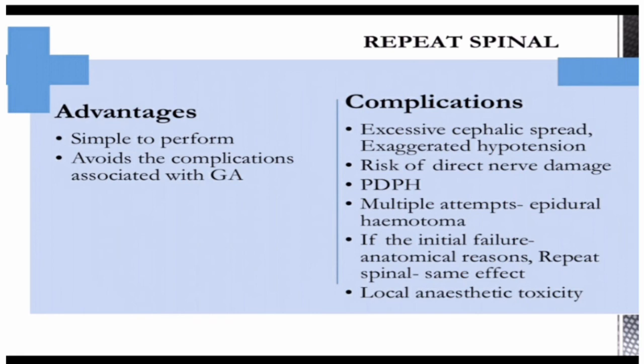Repeat spinal can avoid complications associated with general anesthesia. However, its own complications include excessive cephalic spread, exaggerated hypotension, risk of direct nerve damage, and increased risk of PDPH. Multiple attempts may lead to epidural hematoma. If the initial failure was due to anatomical reasons, a repeat spinal will likely fail again, and there is a greater chance of local anesthetic toxicity.